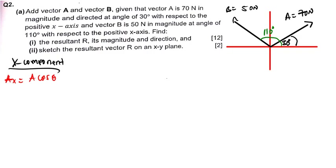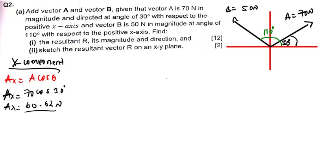Now, Ax equals A cos theta. My A is 70 and my theta is 30 degrees, so Ax equals 70 cos 30, which is 60.62 newtons. For vector B, Bx equals B cos theta. My B is 50 and theta is 110 degrees, so Bx equals 50 cos 110.